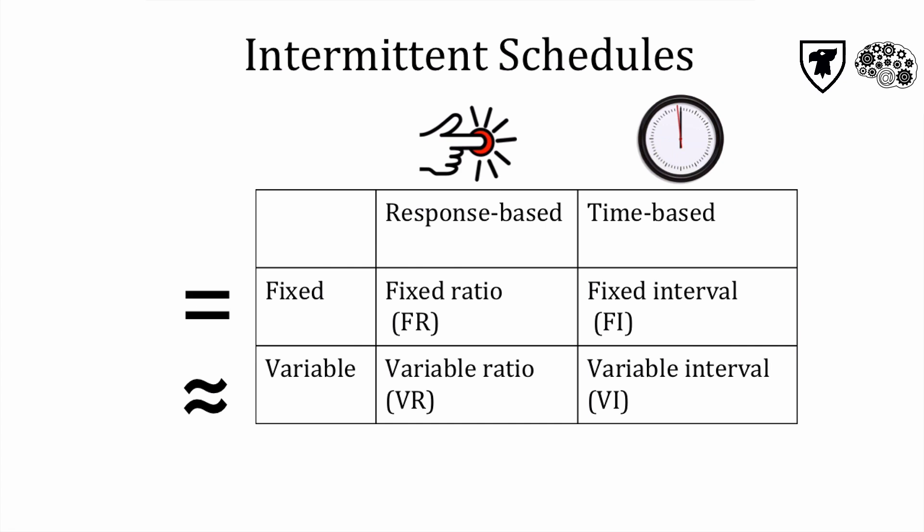Skinner identified four different patterns of intermittent reinforcement, categorized by whether reinforcement is based upon the number of responses or period of time, and how strictly they adhere to the schedule.